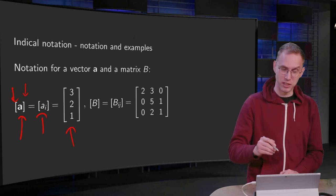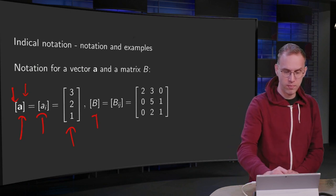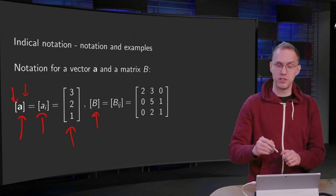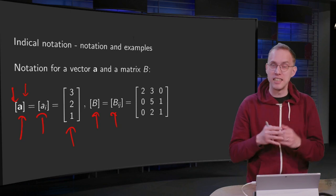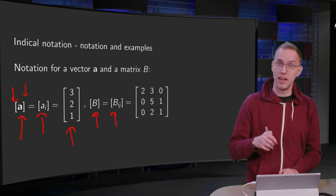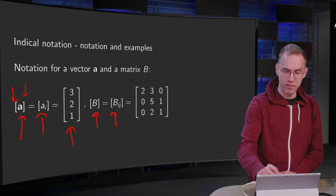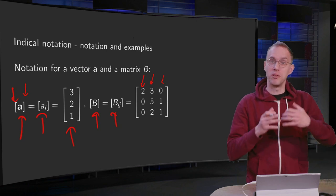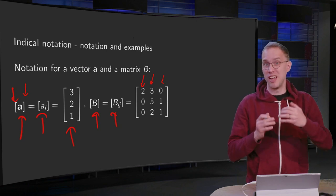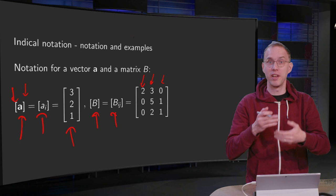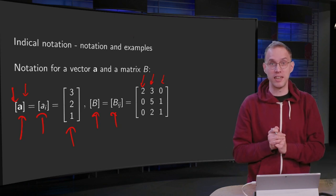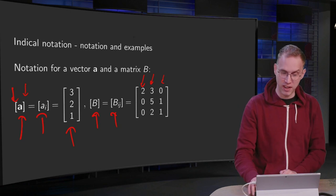Similarly for the matrix B, if you have something with two indices, we consider these bij as elements of a matrix B, and then we have here our b11, b12, b13, and so on. This is a convenient way to tell what the b11 and so on are. Just write them as a matrix, and if you have something with one index, write this as a vector.